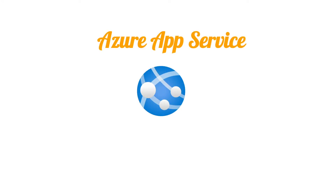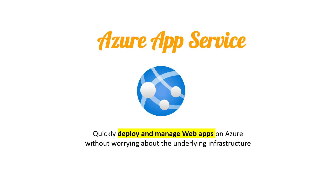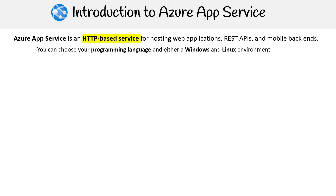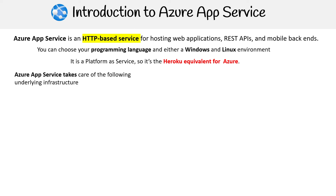Hey, this is Andrew Brown from Exam Pro, and we're looking at Azure App Services, which allows you to quickly deploy and manage web apps on Azure without worrying about the underlying infrastructure. This is known as a platform as a service. Azure App Service is an HTTP-based service for hosting web applications, REST APIs, and mobile backends. You can choose your programming language, and it can be either a Windows or Linux environment. If you've ever used Heroku, it's basically the Heroku of Azure.